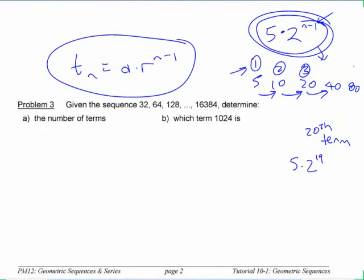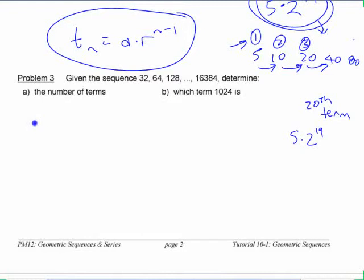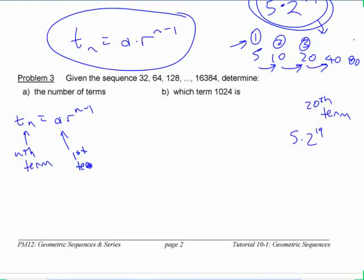There are four things involved there. If you have T_n equals a·r to the n minus 1, that's the nth term, that's the first term, that's the ratio, and this is the term number or number of terms, depending on the context.